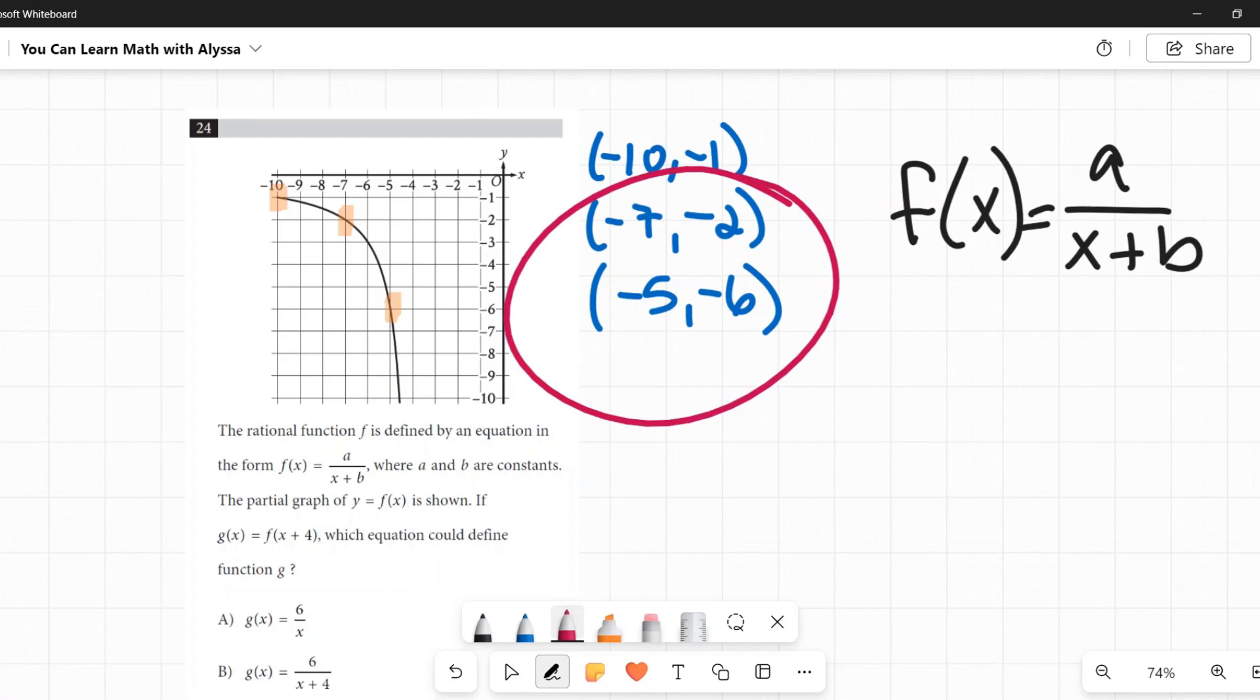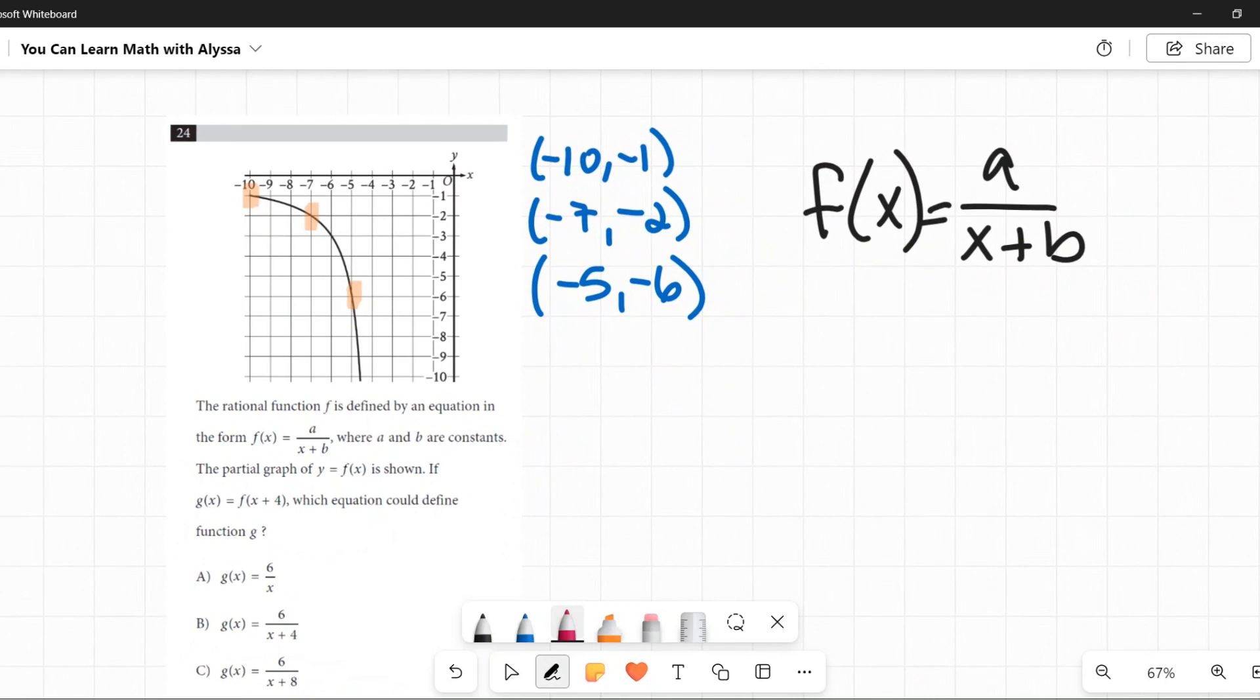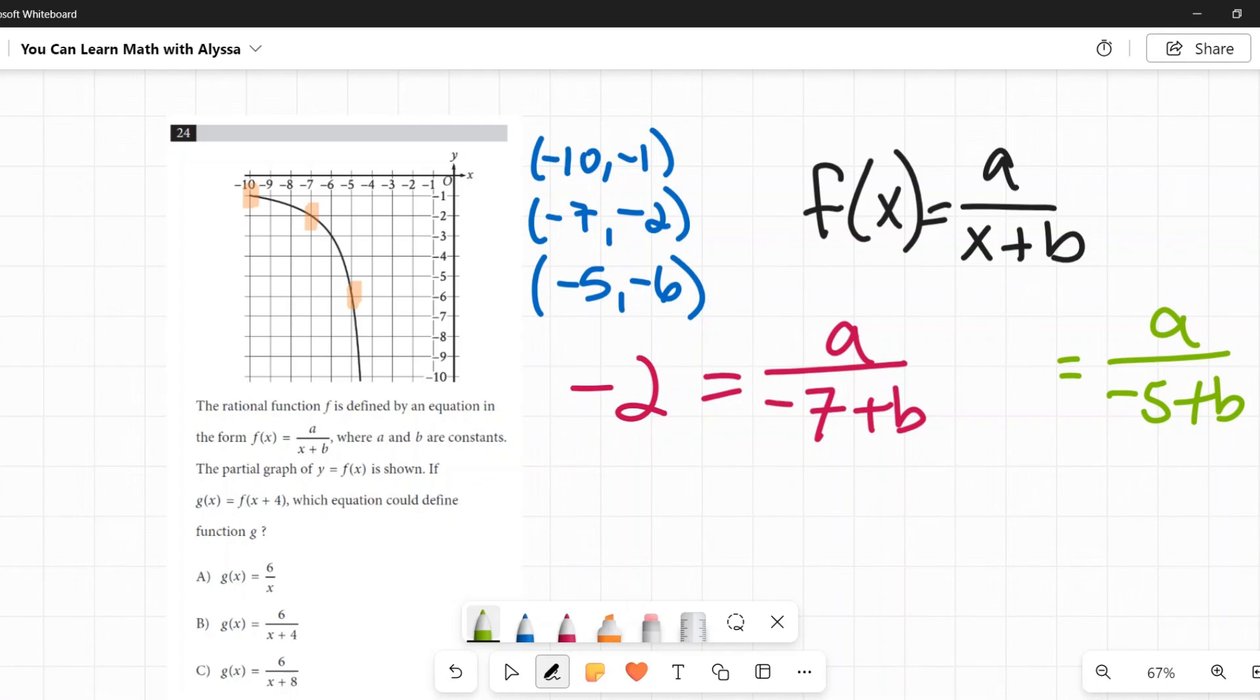So what I'm going to do is I'm going to take two pairs. I'm just going to pick these two. It doesn't matter. You can pick any two you want. And I'm going to plug each of them into this equation in turn. And then I will have two equations. I'll have a system of equations. And that will help me solve for a and b. All right. So first, I'm going to take negative 7 and negative 2. I'm going to plug negative 7 in there. So I have negative 7 plus b. That's all under a. And that is equal to negative 2. Then I also have, I'm going to use negative 5 and negative 6. I plug negative 5 in for x. So negative 5 plus b on the bottom, a on top. And all this is equal to negative 6.